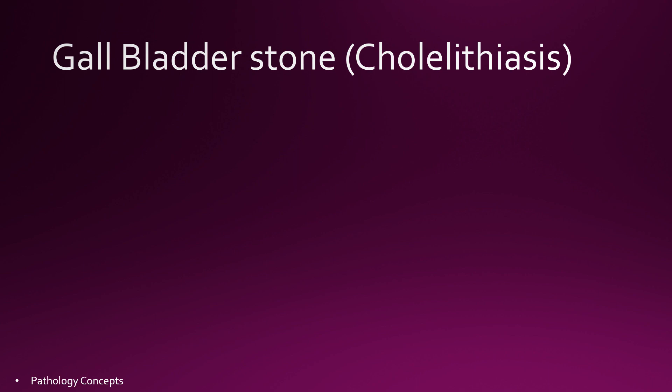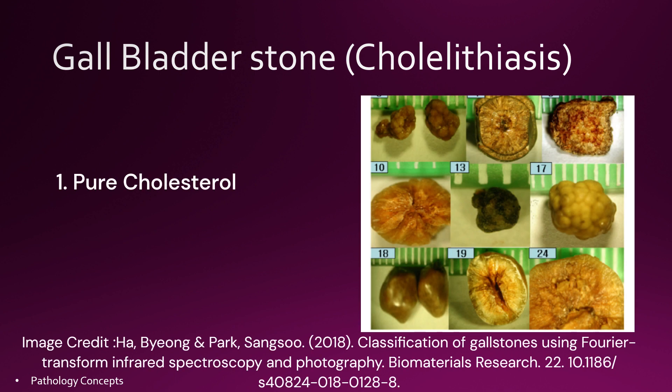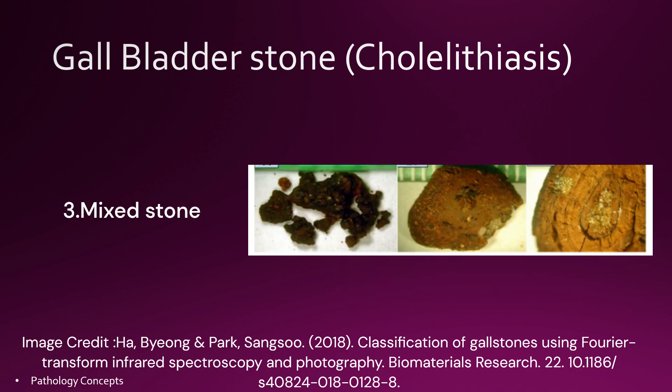Next is gallbladder stone, also called cholelithiasis. Mainly three types of gallbladder stones exist: first is pure cholesterol stone, second is pure bilirubin stone, and third is mixed stone. Cholesterol stones are soft with smooth surfaces and show central radiation on cross section. Bilirubin stones are soft and amorphous with rough surface.